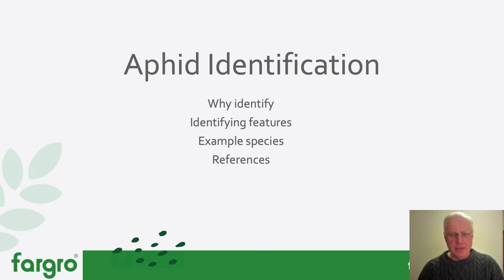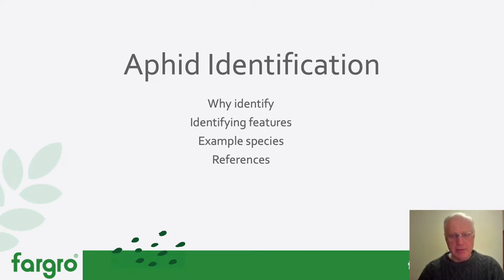Hello everybody and welcome to this quick run through on aphid identification. We're going to cover why identify — not only whether it's an aphid but also what aphid species — looking at a few identification features. With around 500 aphid species out there, we're only going to look at a few, probably the most likely ones we'll find on horticultural crops, and a few references that are available.